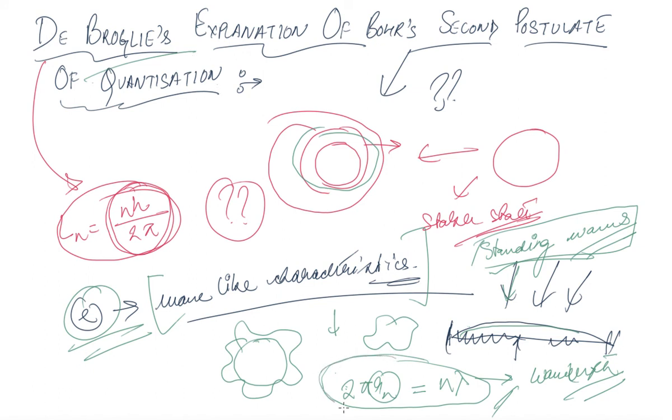using this hypothesis. This was given by 2πrn = nh/mvn. This is the equation of De Broglie.